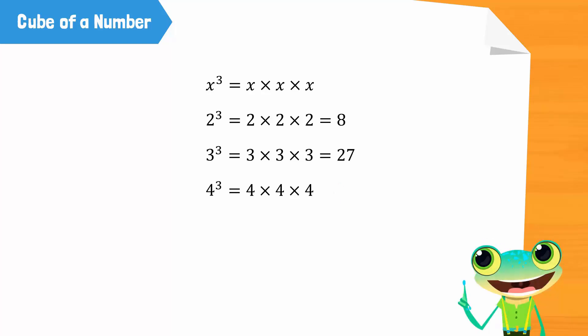To make the calculation of cubes easier, we first multiply the number by itself. 4 into 4 is 16. And then we multiply the number again. 16 into 4 is equal to 64.